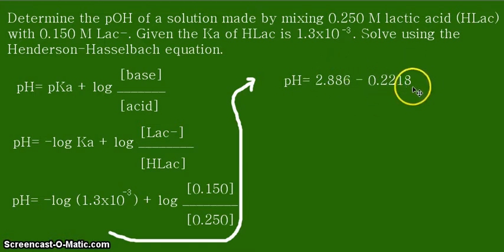Now remember, these values contain extra significant figures so that when we get to our final answer, that's the only time that we should round off with our final answer in the correct number of significant figures. And there you have it, the pH of the given buffer solution is equal to 2.66.